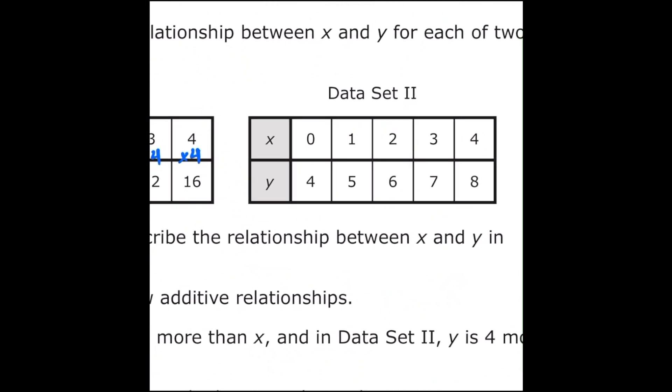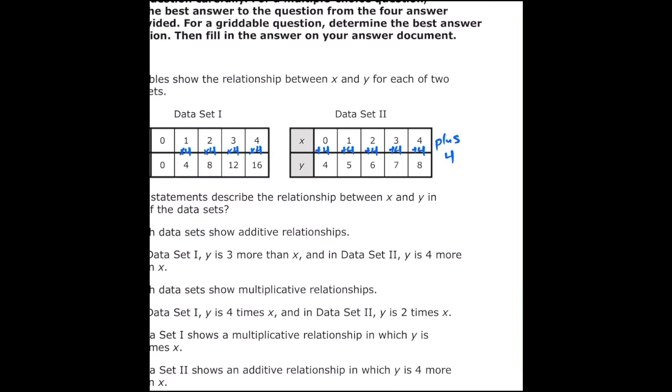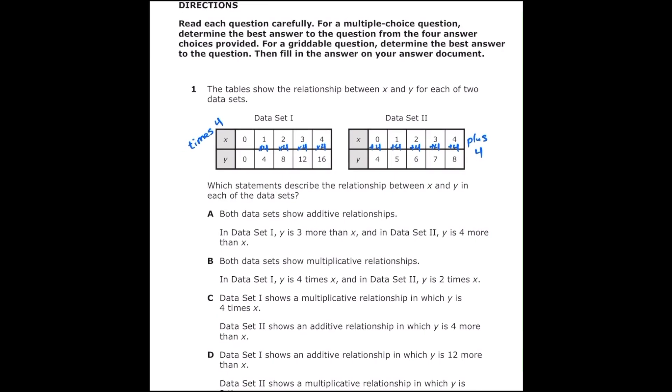Over on data set two, I'm going to do the same process and this time I noticed that every x value is having four added to it to get the y value. So I'm going to write plus four all the way across and then I'm also going to write plus four to the side just so that I don't forget, once I start looking at the answer choices.